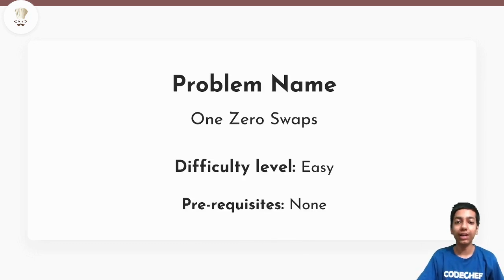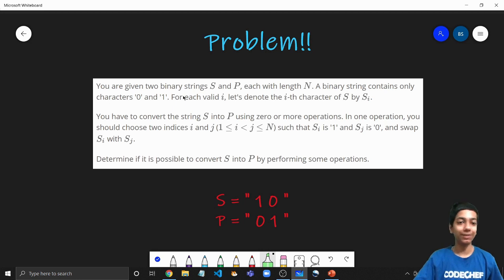So the problem that we'll be discussing today is 1-0 swaps, the difficulty is easy, and there are no prerequisites. So let us quickly jump in. So here's the problem guys. So we'll be given two binary strings, s and p, each of length n, and a binary string contains only 0 and 1. Like these are two binary strings. Then for each valid i, the i's character is si. So now we need to convert s into p using 0 or more operations of the following type. Now this is a very generic kind of a question where we need to convert one thing to another using the given operation a few number of times and possibly 0 as well.